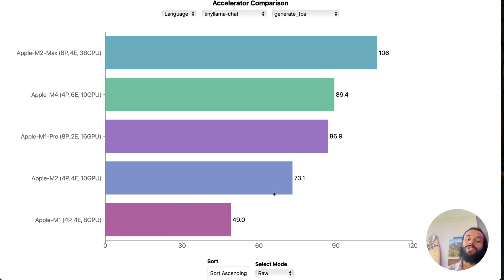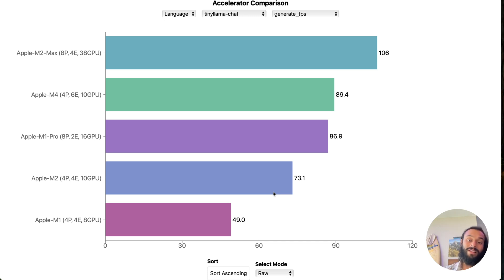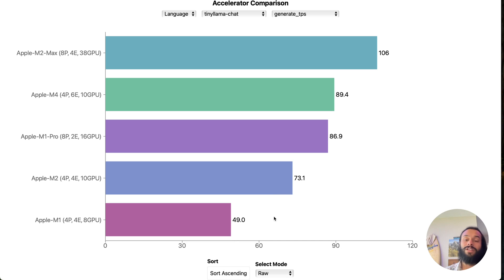It does make you wonder if this is just the increase in memory bandwidth rather than the GPU performance itself in this specific task, as the M2 had 100 gigabytes per second of memory bandwidth and the M4 has 120. So you kind of wonder whether that increase is primarily from that.